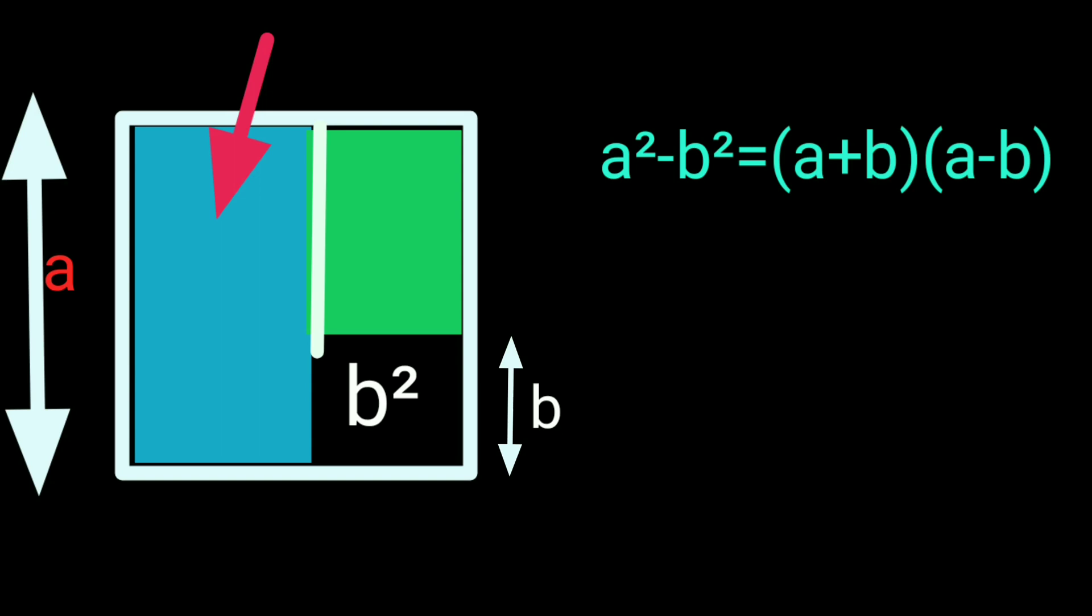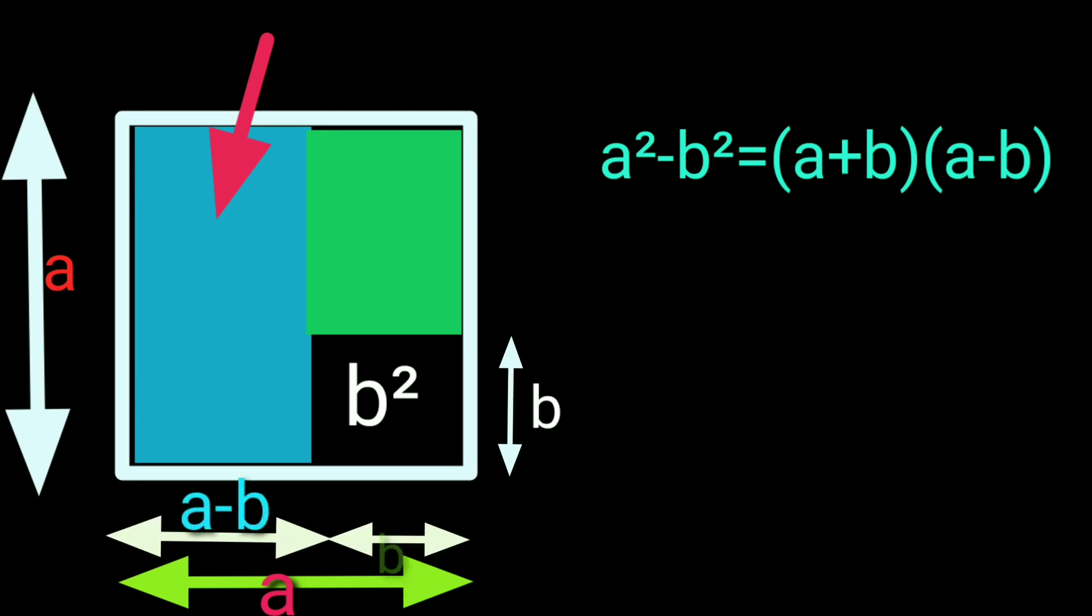As the total length is a and we subtracted b from that, we get a - b units. Its breadth is a - b units, so the area is a(a - b).